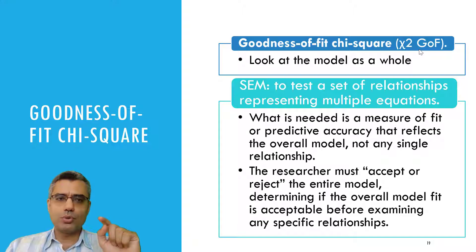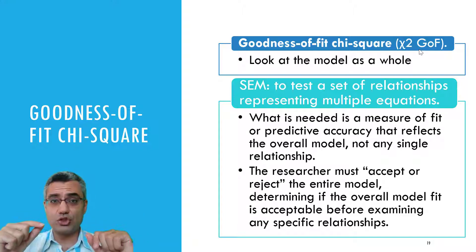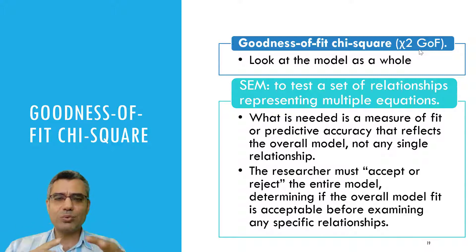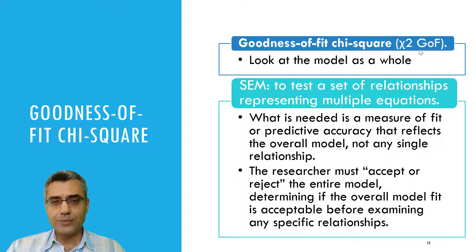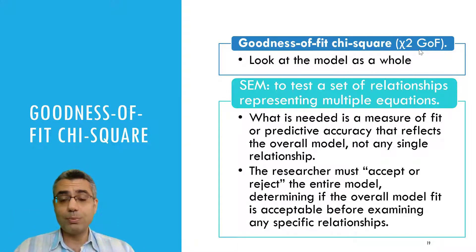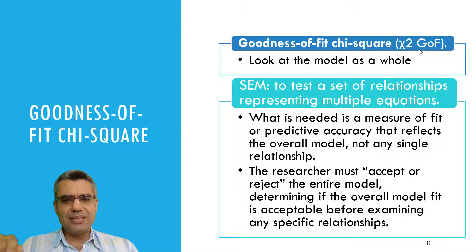Goodness of fit chi-square looks at the model as a whole, not just single relationships. We want to see whether the whole model is a good model or not. So you as the researcher first need to test whether the model fit is good or not. This means you accept or reject the whole model. We don't test the relationship or test the hypothesis before making sure that this is a good model — the model you have developed in your lab.